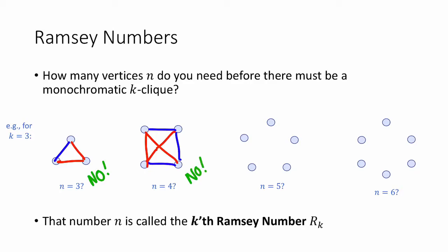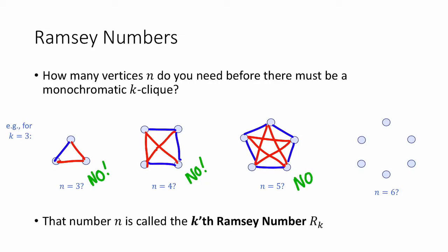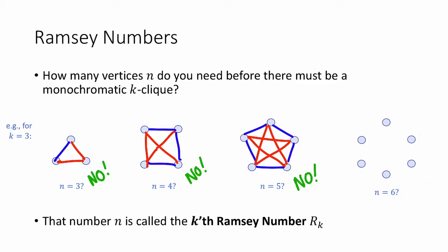How about five vertices? To make sure you have the hang of what's going on, why don't you try to pause the video and see if you can color all of the edges in the complete graph on five vertices so that there is no monochromatic triangle? So there needn't be a monochromatic triangle when n equals five either. How about for n equals six? Pause the video and try to color all of the edges between six vertices and see if you can avoid having a monochromatic triangle.